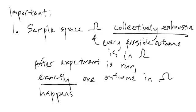If you remember from the coin flip example where we had heads and tails, after you flip the coin, exactly one of these happens. You don't have none of these happen or both of these happen. It's exactly one of these happens.